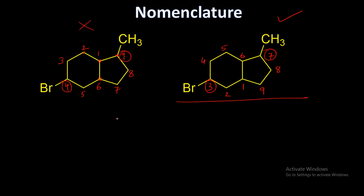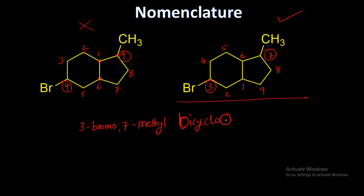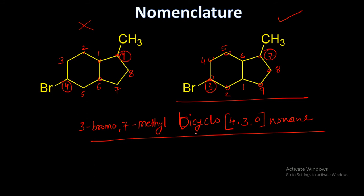With this numbering confirmed, we put substituents in alphabetical order: 3-bromo-7-methyl. Then bicyclo — in square brackets, four atoms on one side and three on the other, written in descending order: four-three. It is fused, so zero. There are nine atoms total so the suffix is nonane. The correct IUPAC name is 3-bromo-7-methyl bicyclo[4.3.0]nonane.